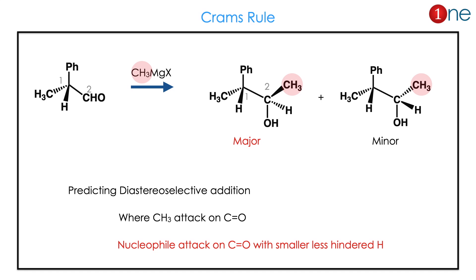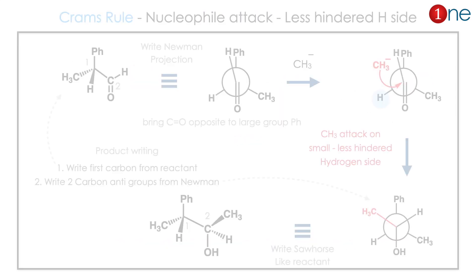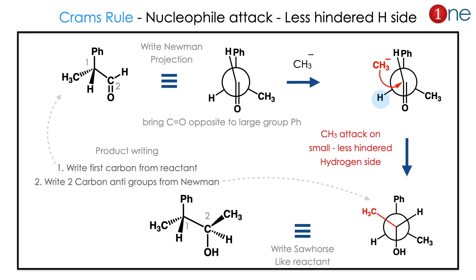In this case you have to predict which is major — methyl above is major or below is major. The rule helps you to predict diastereoselectivity. The selectivity is simple: the nucleophile attacks on the less hindered side. Here, a 1,2-carbon system is present and the carbonyl is the second one. You have to convert it into the Newman projection for better understanding.